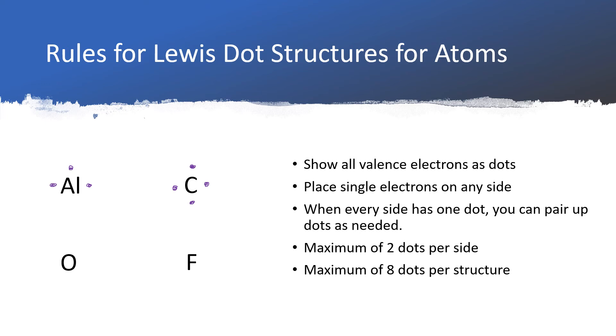Oxygen is in group number 16, so it has six valence electrons. So we can start putting those six electrons around the oxygen. Once we've placed four, we still have to put another two.